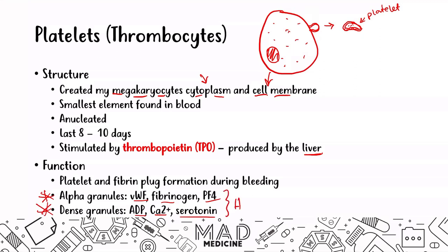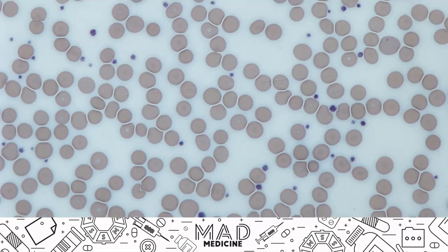Here is a slide of platelets. These little tiny purplish-bluish dots are what platelets look like under the microscope. Do not get them confused for anything else — this is not an infection. These are simply platelets roaming around in the bloodstream.